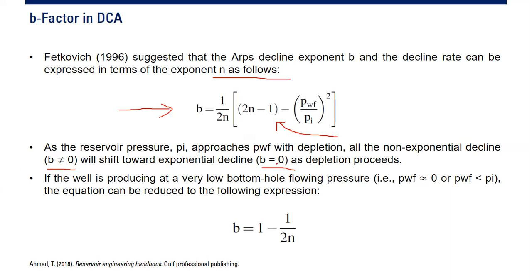As depletion proceeds, b will decrease from positive non-zero, maybe 1 or 0.5, down to b equals 0. If the well is producing at very low bottom hole flowing pressure, the equation can be reduced to the following expression.